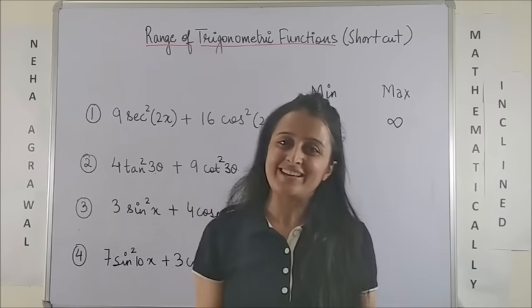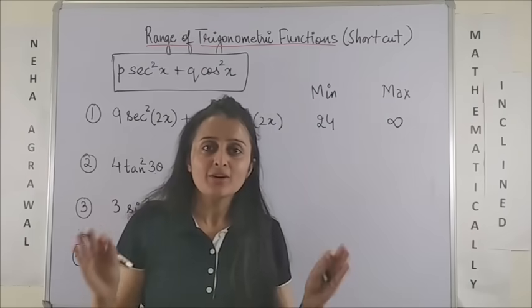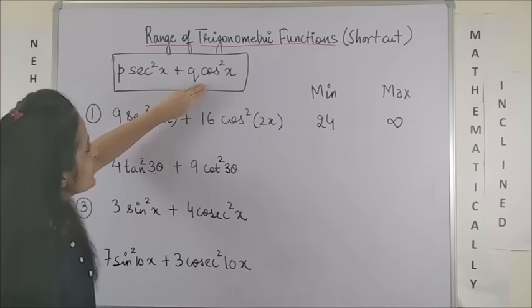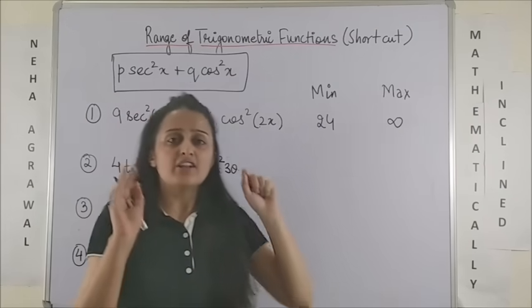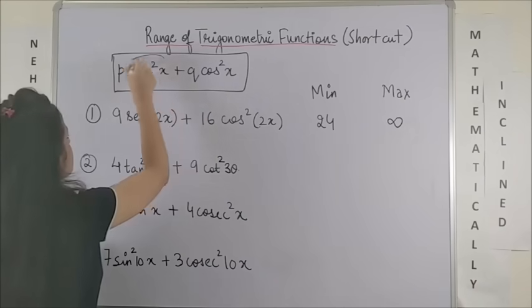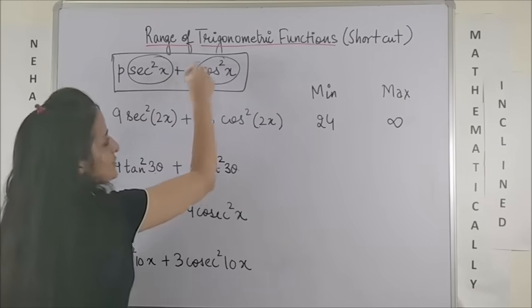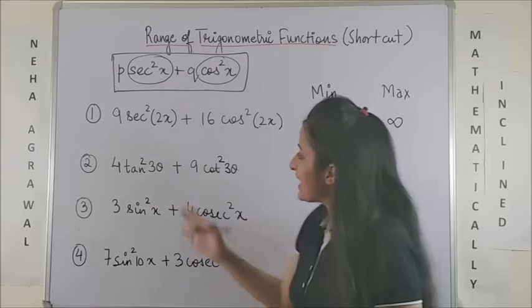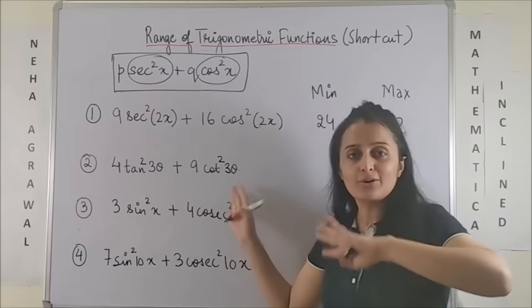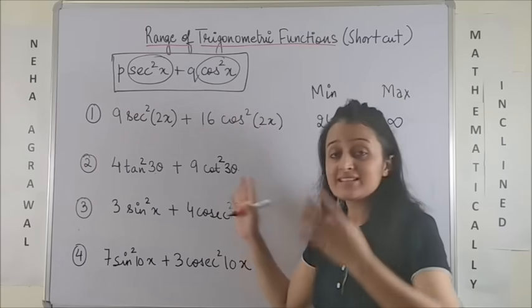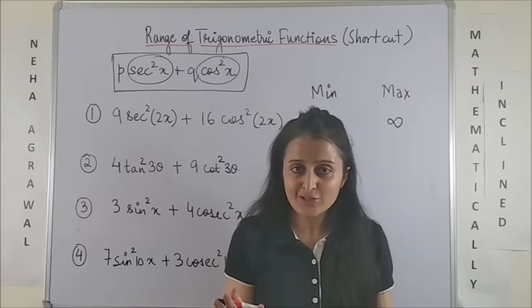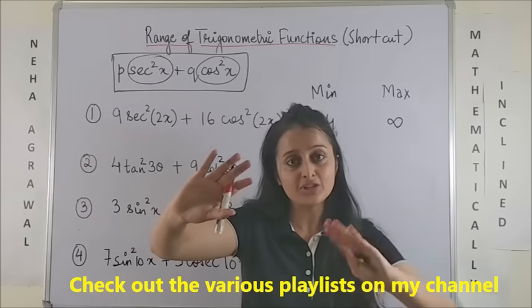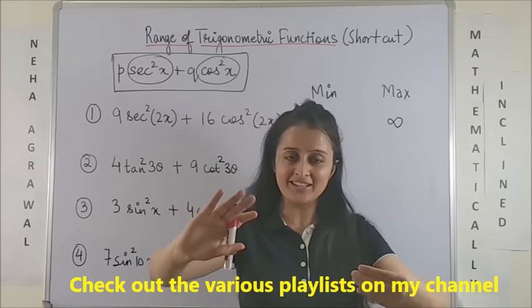let the magic begin. So, whenever you come across this form which says P into secant square x plus Q into cos square x. Now, please see, this secant square x and cos square x, they are reciprocal of each other. Likewise, I can have tan square x and cot square x, sin square x and cosecant square x. So, in short,